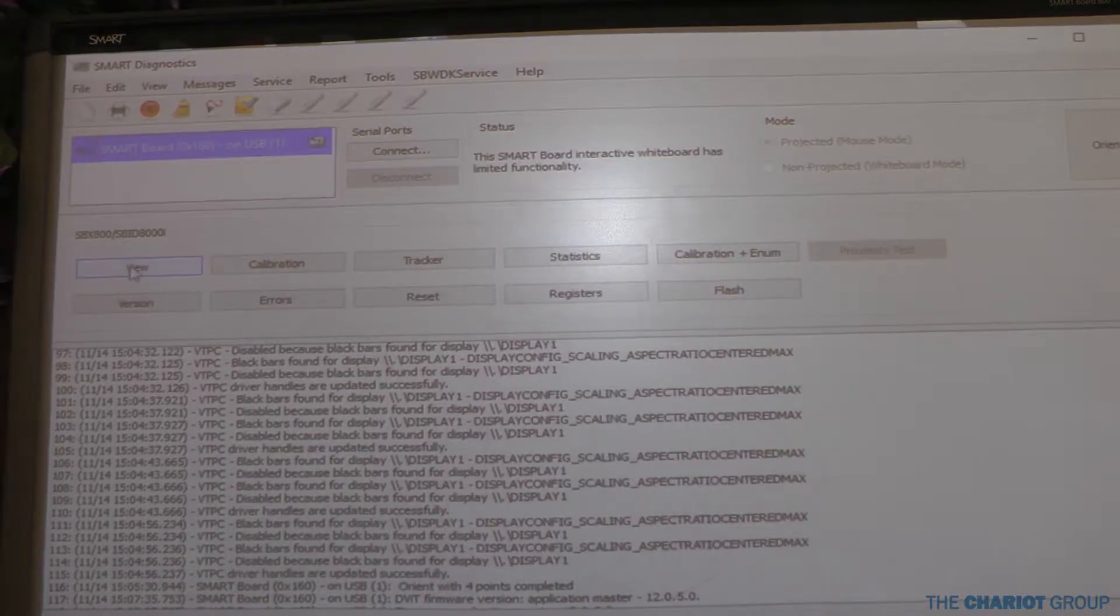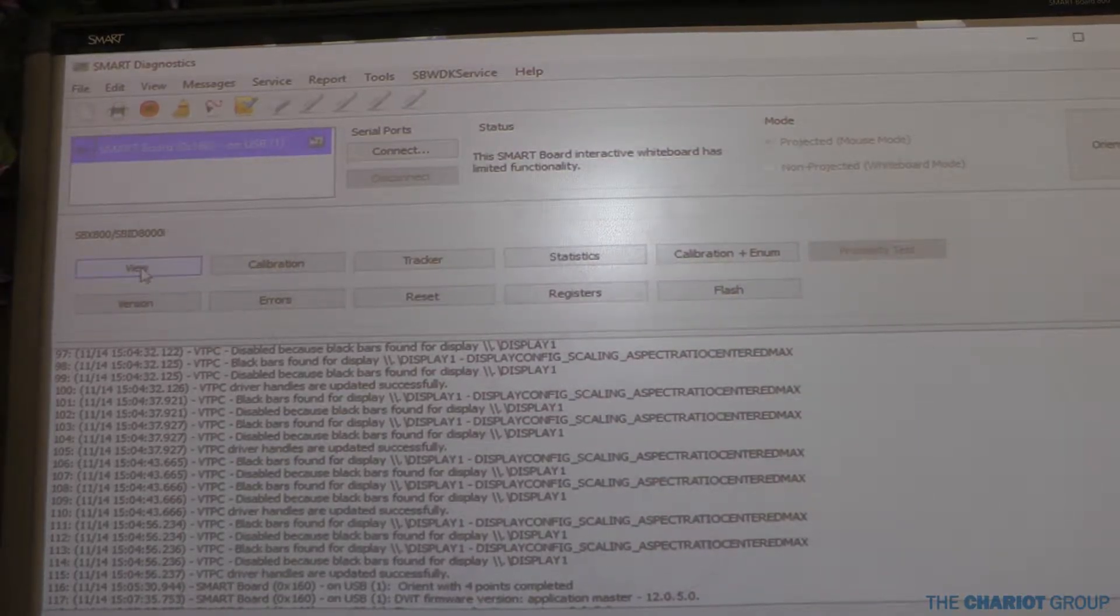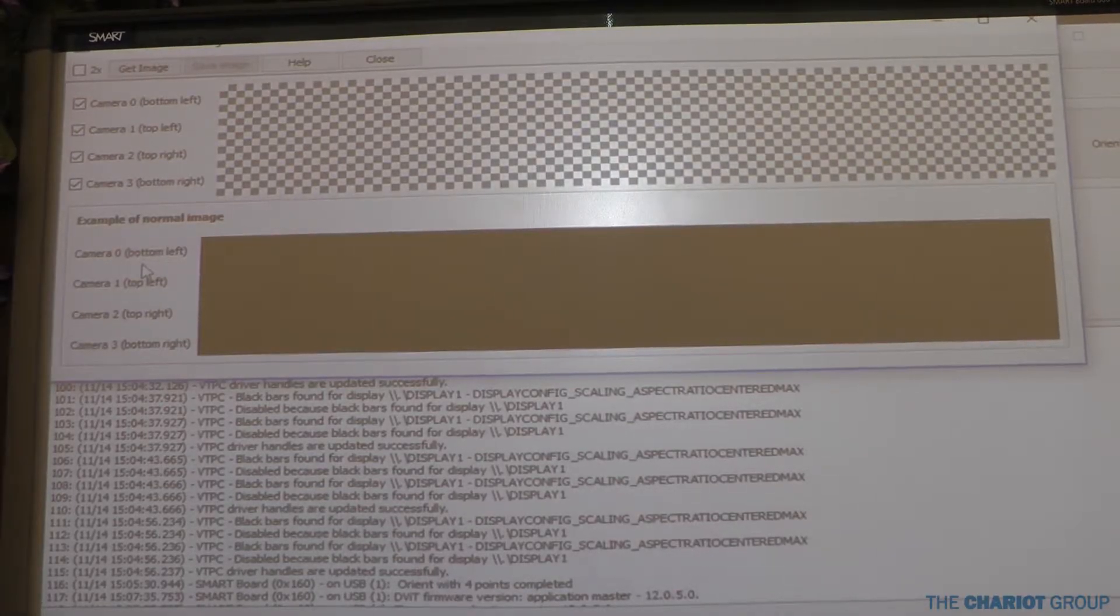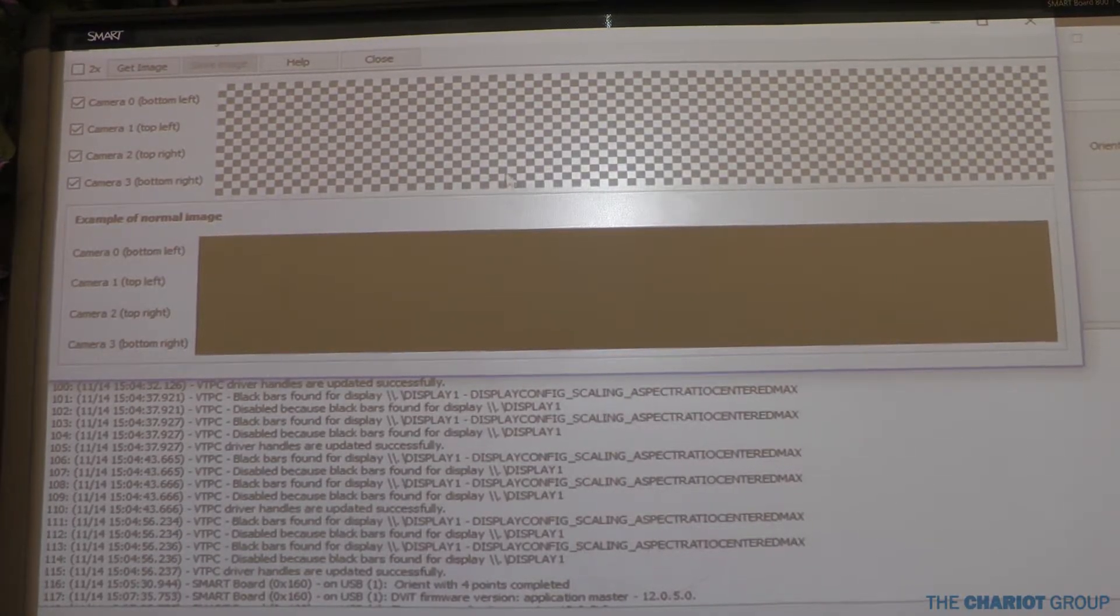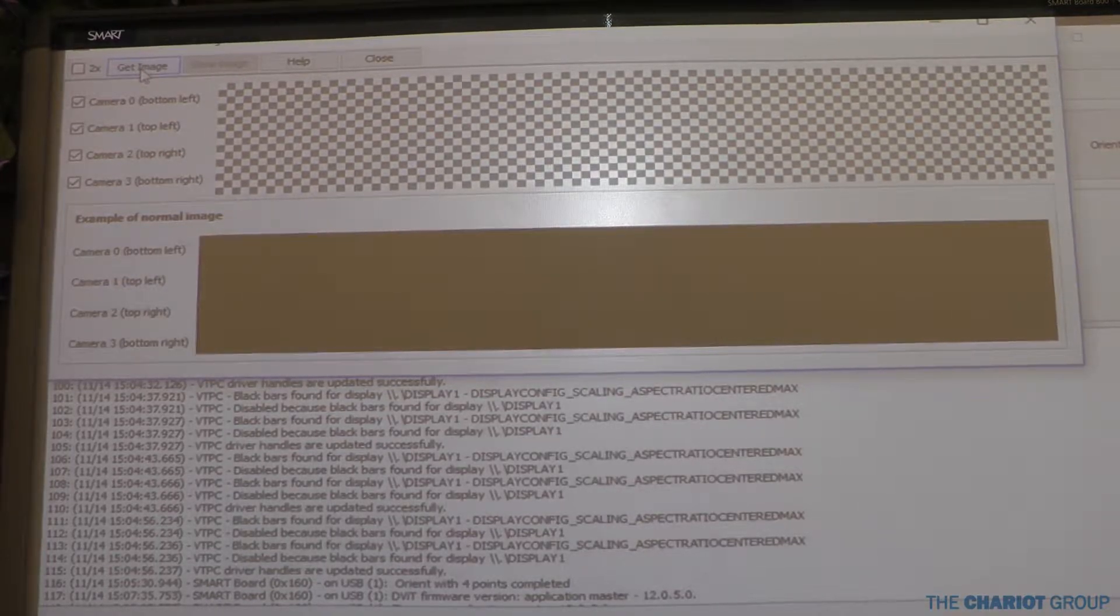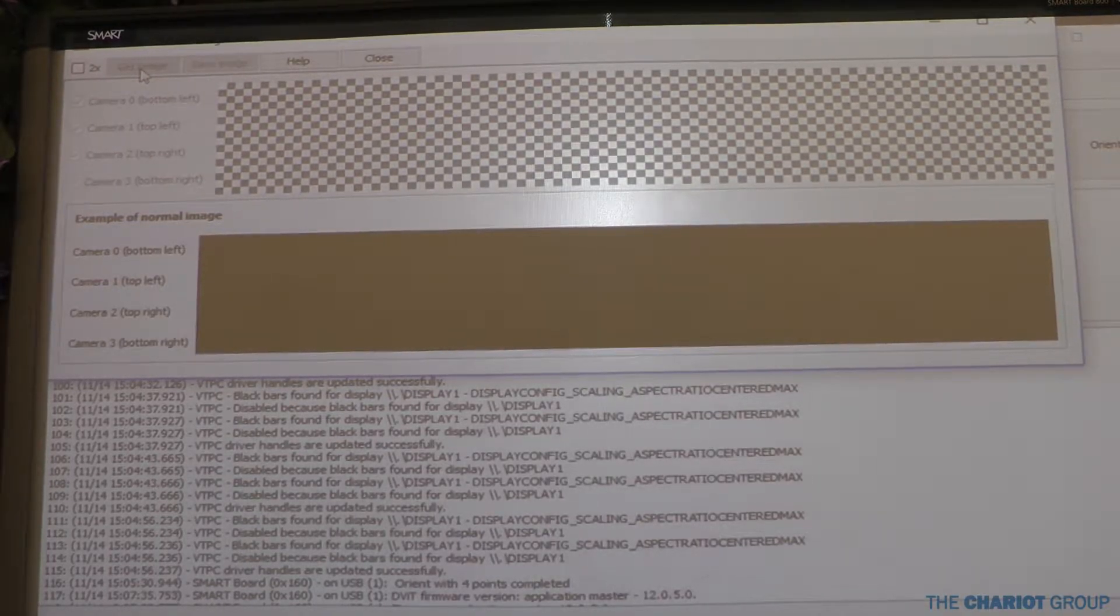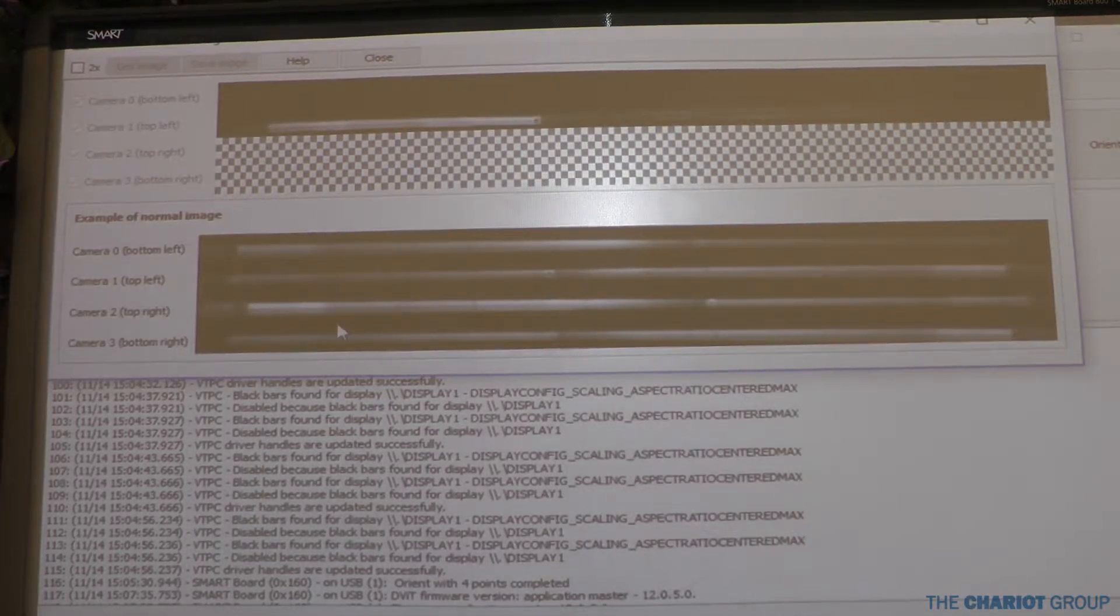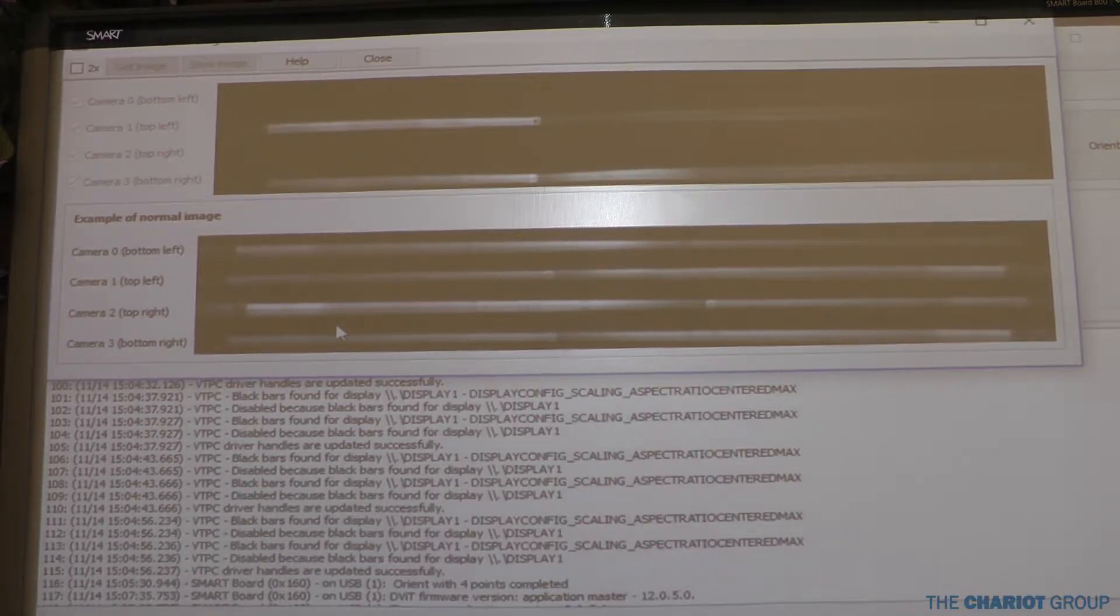We're going to click on that. It's going to open up this new toolbar here. We're going to go to view. This is actually going to give us a view of our cameras, and we're going to click get image. You'll see on the bottom representation what it's supposed to look like and on the top what it does look like. It looks like we have a couple cameras that are not working.